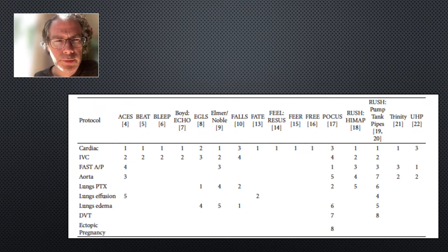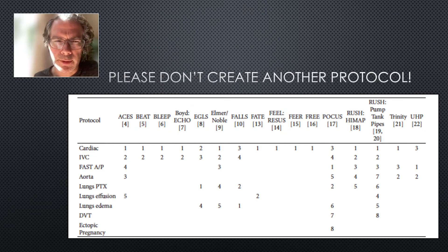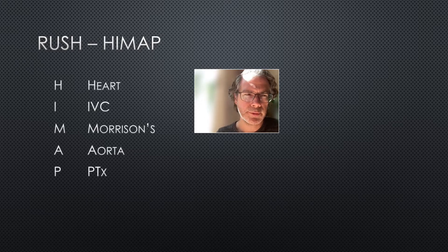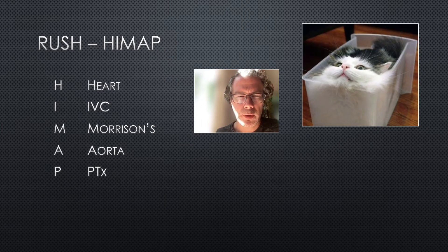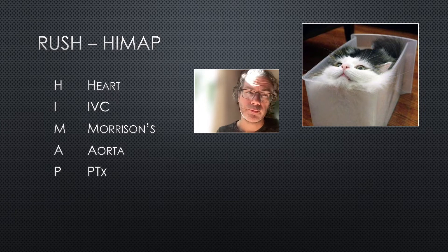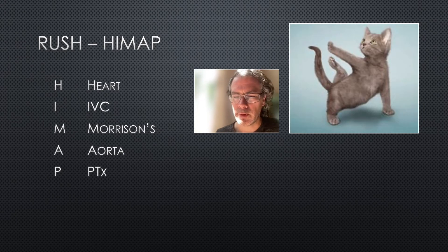There are lots of different protocols for using ultrasound in shock. The most commonly used one in the UK is the RUSH exam, also known as HIMAP. HIMAP is a good starting structure so you don't forget things, but don't feel trapped in a rigid box — as we saw in our case we left out Morrison's and the aorta because they weren't relevant.